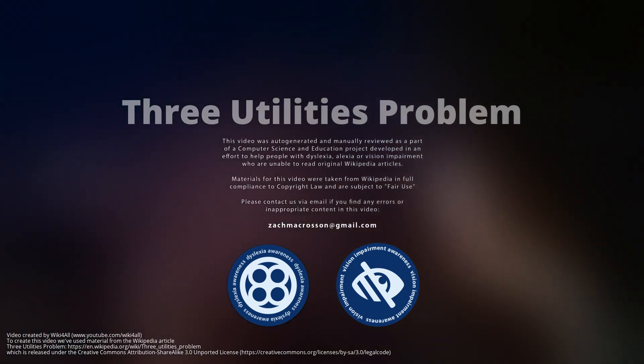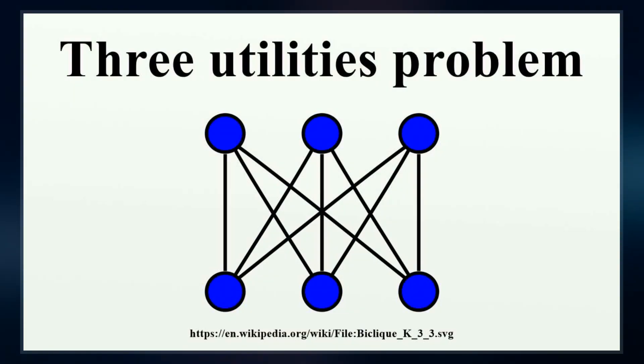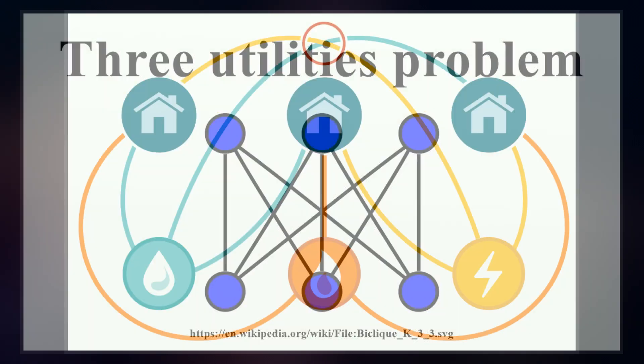The classical mathematical puzzle known as the three utilities problem, or sometimes water, gas and electricity, asks for non-crossing connections to be drawn between three houses and three utility companies in the plane.